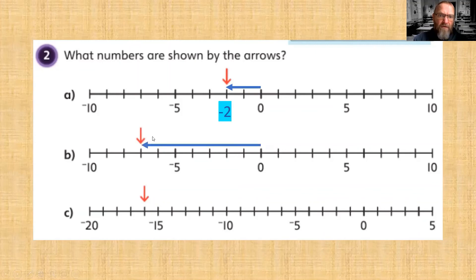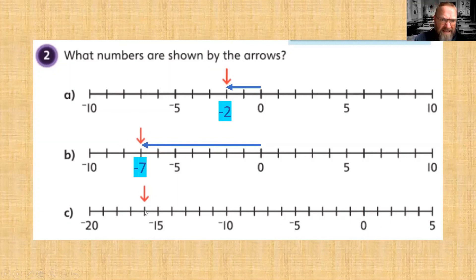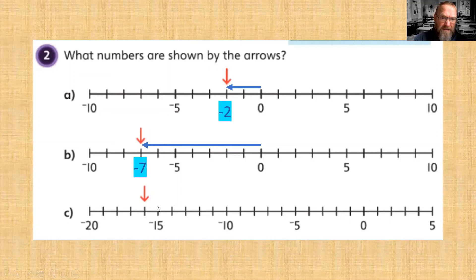We count back all the way to minus seven. Now where's the zero? You see it's moved. If we hadn't checked for zero we might have said this was minus seven as well — so it's really important to check for that zero. Now counting back in jumps of five: minus five, minus ten, minus fifteen, and one more — that is going to be minus sixteen.